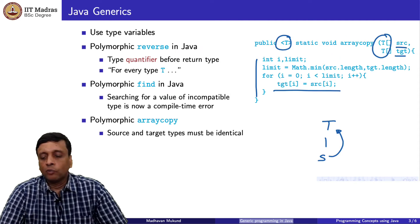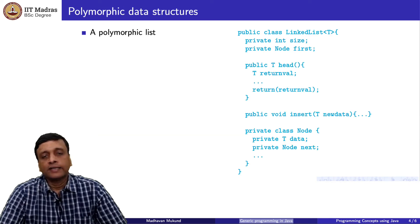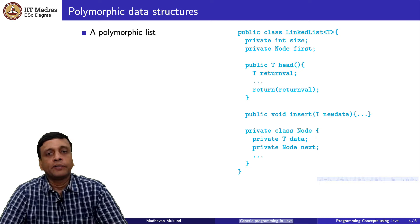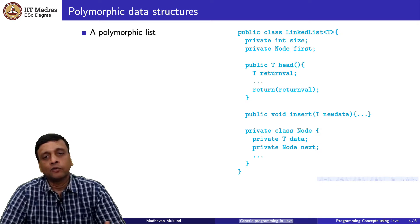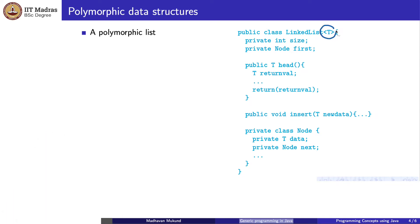Moving forward, let us look at defining polymorphic data structures. We want to define a linked list that can hold arbitrary values. Earlier, each private Node stored a data value of type Object, which caused two problems: objects need not all be the same type, and every extracted value had to be cast back to the original type. Now we use the type quantifier differently — attaching it to the class definition itself.